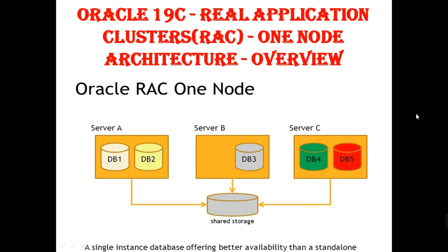This is exclusively prepared for Oracle 19c Real Application Cluster RAC for One Node architecture and overview. This is a RAC One Node architecture with server A, server B, and server C — so db1, db2, db3, db4, and db5. These will be configured on shared storage. Two RAC VMs will be configured for RAC One Node, and the database remains running on a single node only.